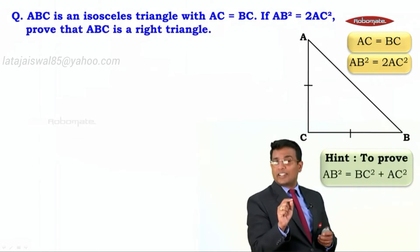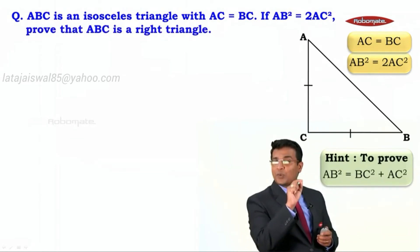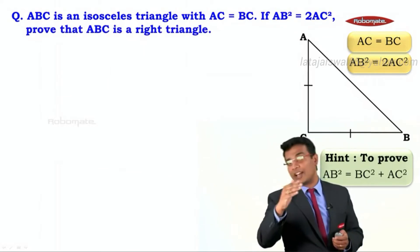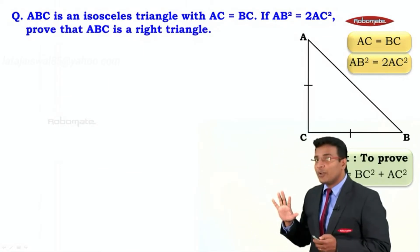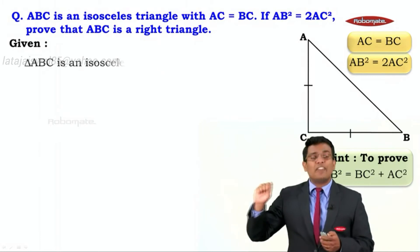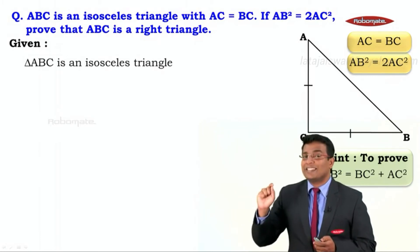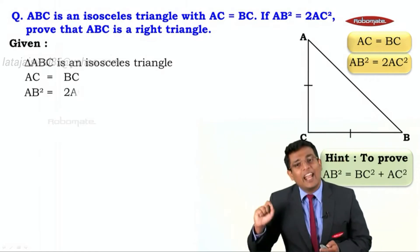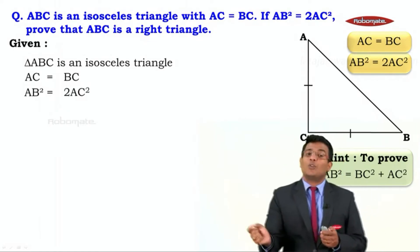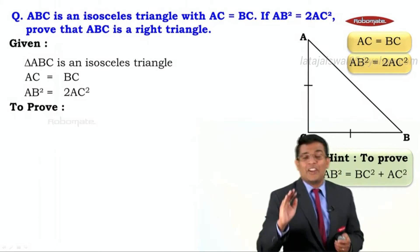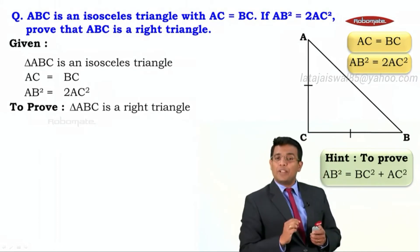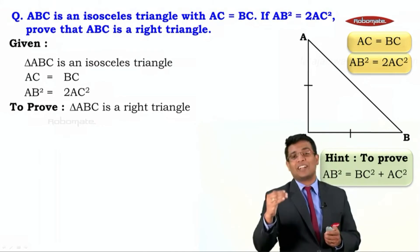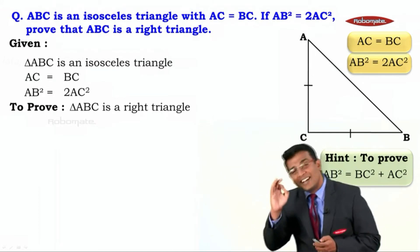That means we need to prove that AB square is equal to BC square plus AC square. So the given information is: triangle ABC is an isosceles triangle, meaning AC is equal to BC, and AB square is equal to twice of AC square. We need to prove that AB square is equal to BC square plus AC square, which would confirm that triangle ABC is a right triangle.